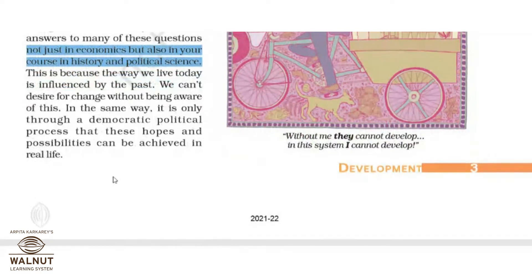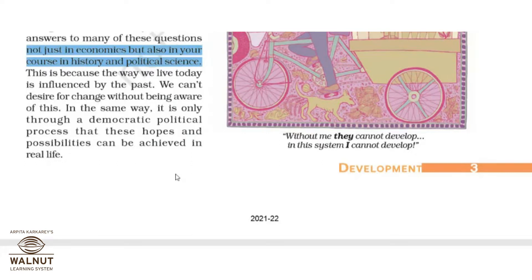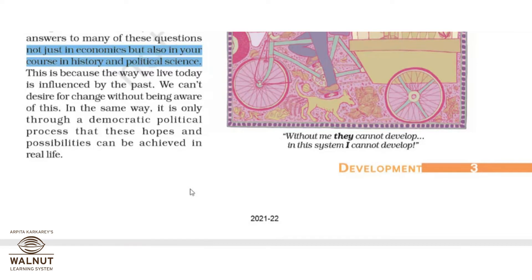Development is a moving target — it is not stationary. Someone may say their country is developed because streets have proper lighting. Another may say theirs is developed because there is no poverty or hunger. Someone else may say their country is developed because of an advanced military or technological system. Each person's idea of development is different.